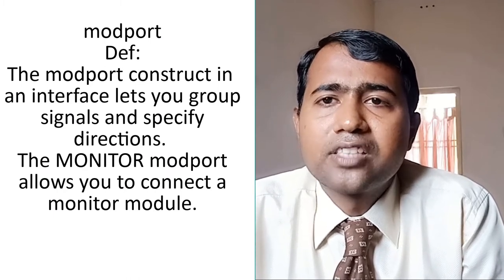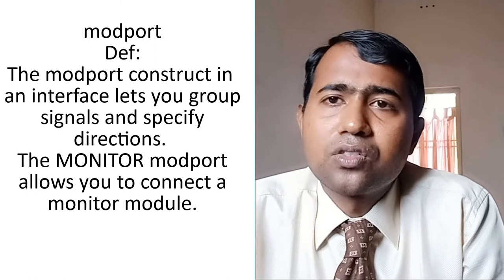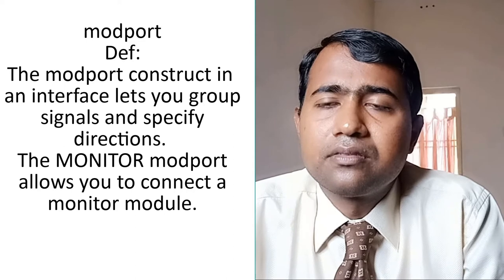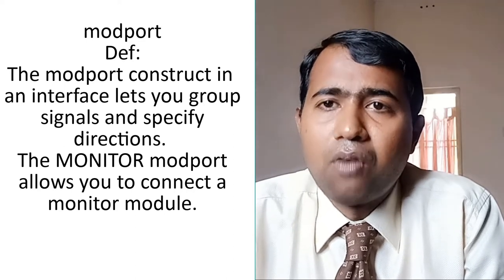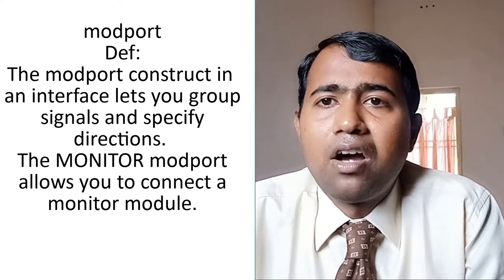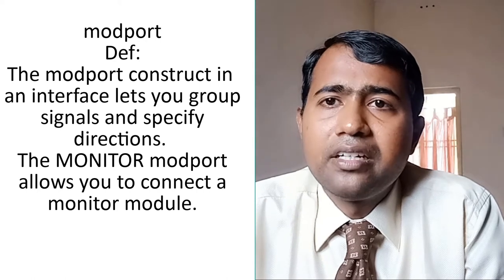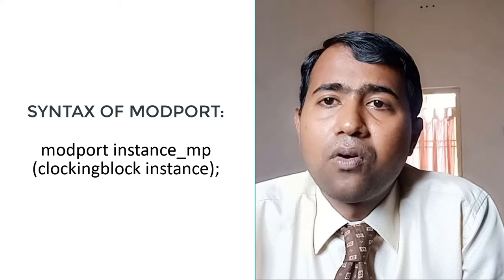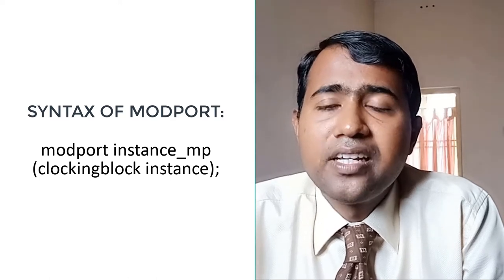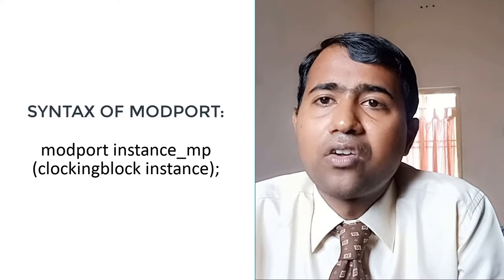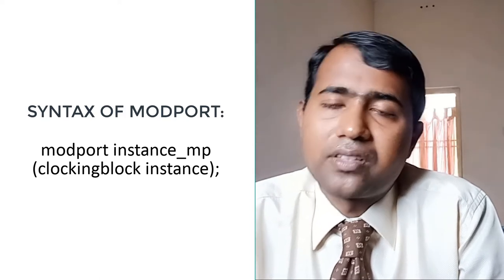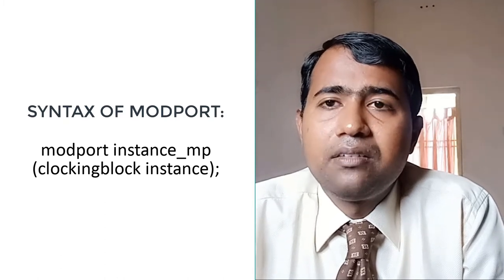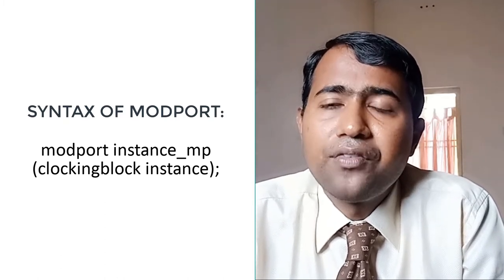Next, we will discuss mod port. Mod port is used for grouping signals and sending them to the monitor — that is the actual operation of mod port. Mod port can be declared inside the interface construct. The syntax is: 'modport <instance> (<clocking_block_name>)'. In general, a bus design contains three mod ports — one for slave, one for master, and one for arbiter.